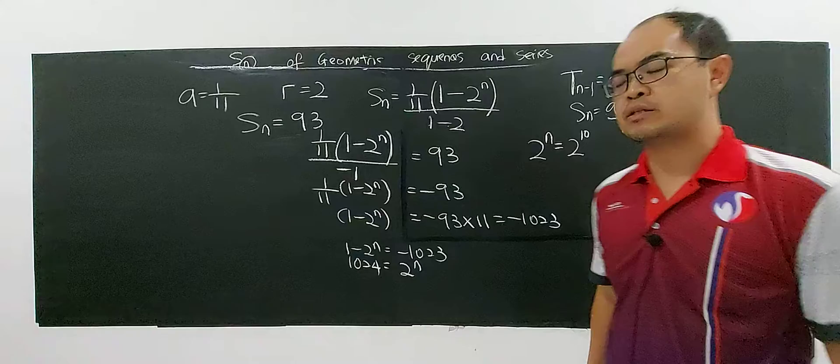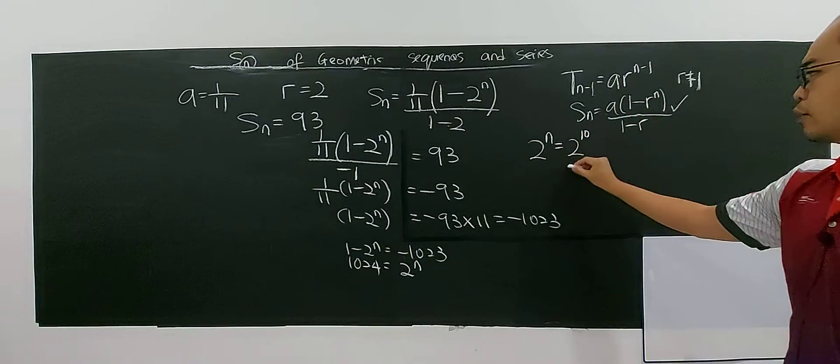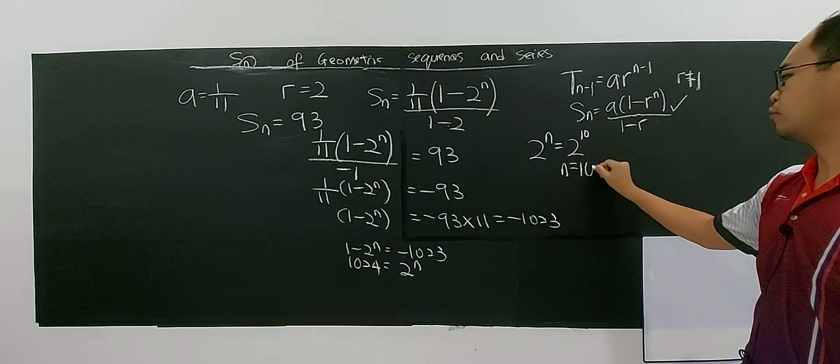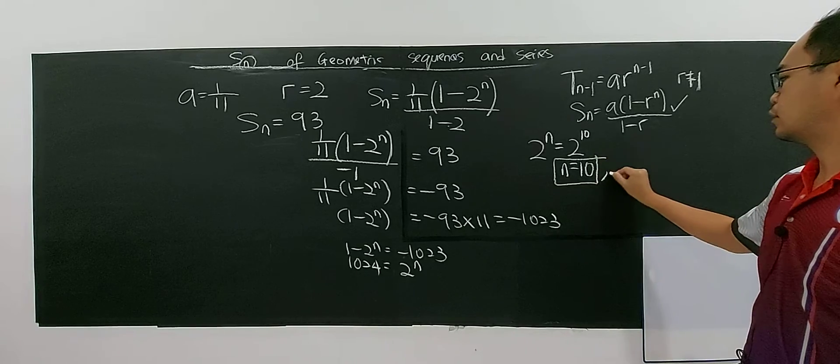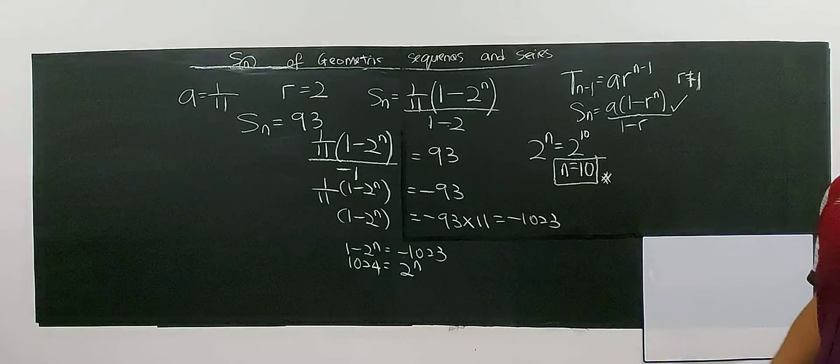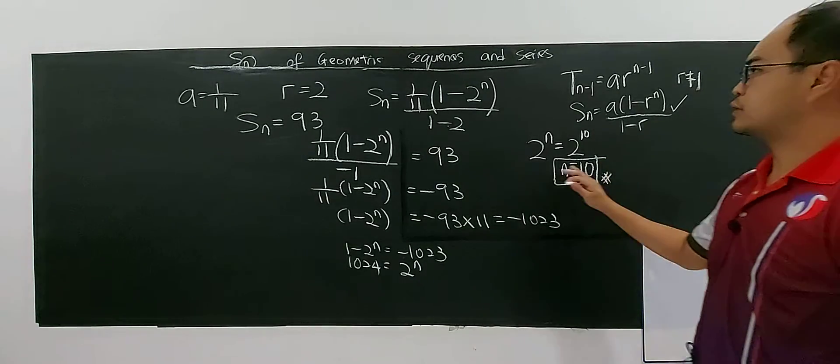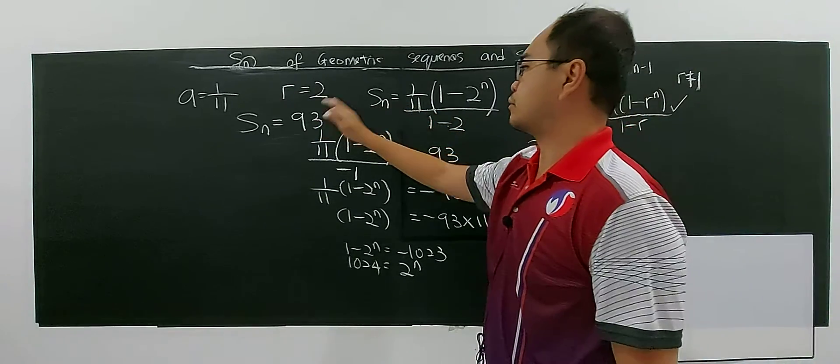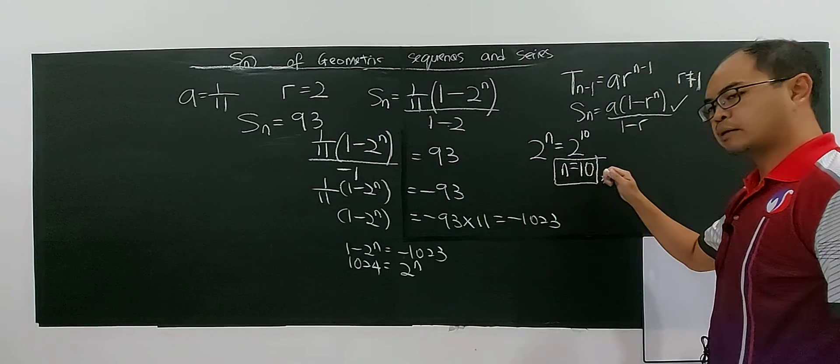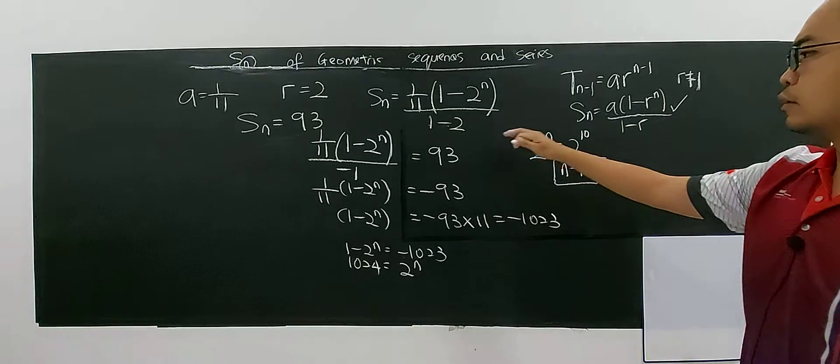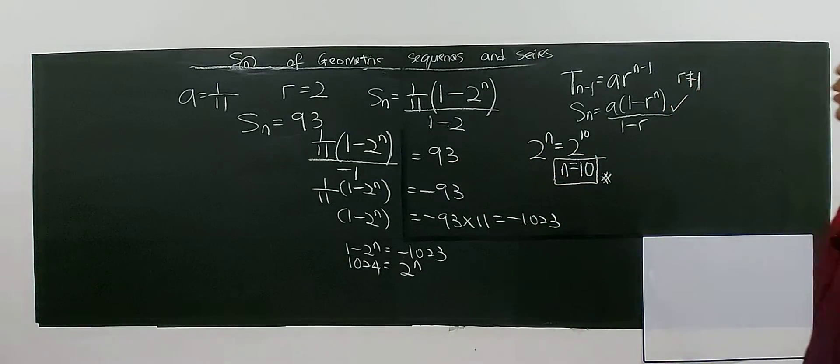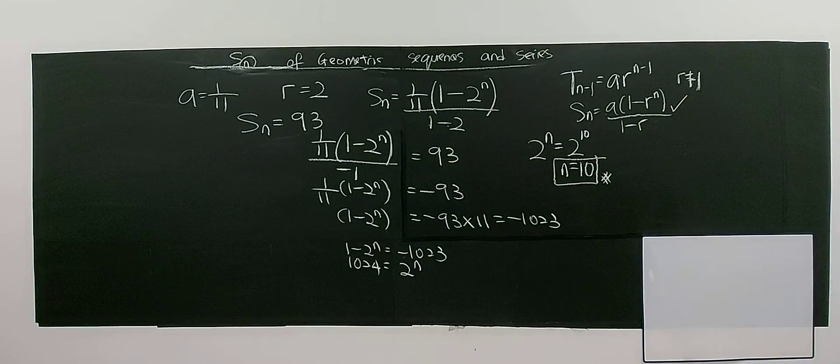So if you're using calculator, 2 to the power of 10, you will get 1024. So directly compare, you can get the value of N, which is N equals 10. So means S10, if you sum up the series from T1 sum up to T10, you will get the value of 93 for this sequence. That's all for this video.